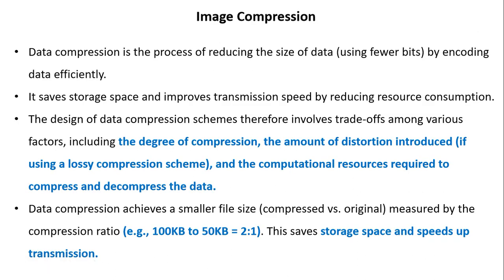Data compression is the process of reducing the size of data, that is using fewer bits by encoding the data efficiently. It saves storage space and improves transmission speed by reducing resource consumption. The design of data compression schemes involves trade-offs among various factors such as degree of compression, the amount of distortion introduced if using a lossy scheme, and the computational resources required to compress and decompress the data.